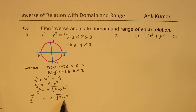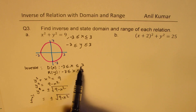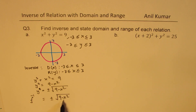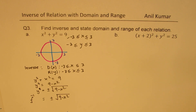From here, you can say that the domain is between plus and minus 3, otherwise the square root will not be valid. So that is how you find the inverse of a circle.